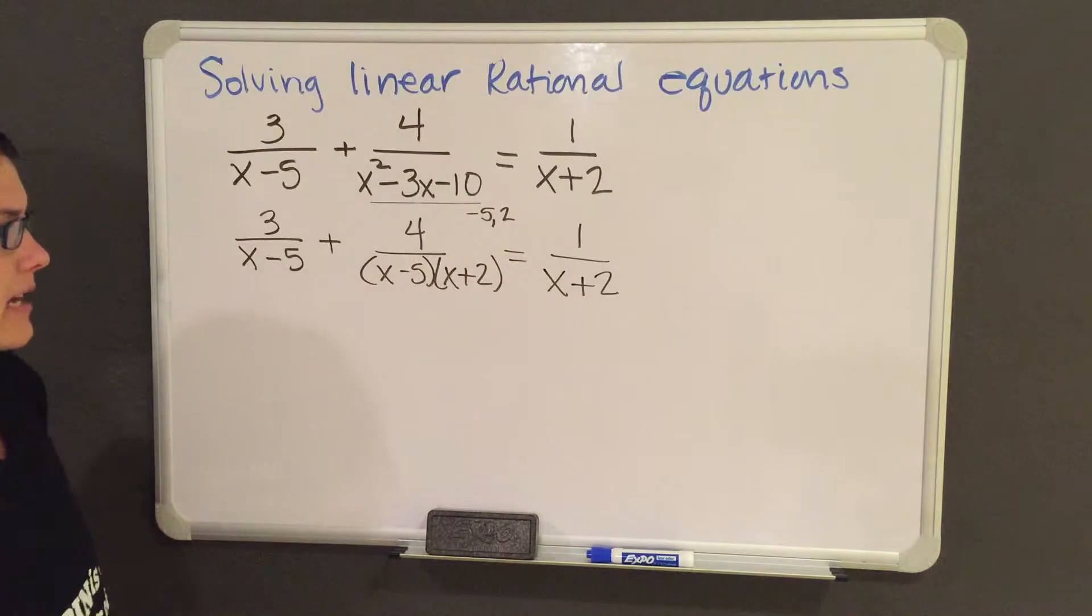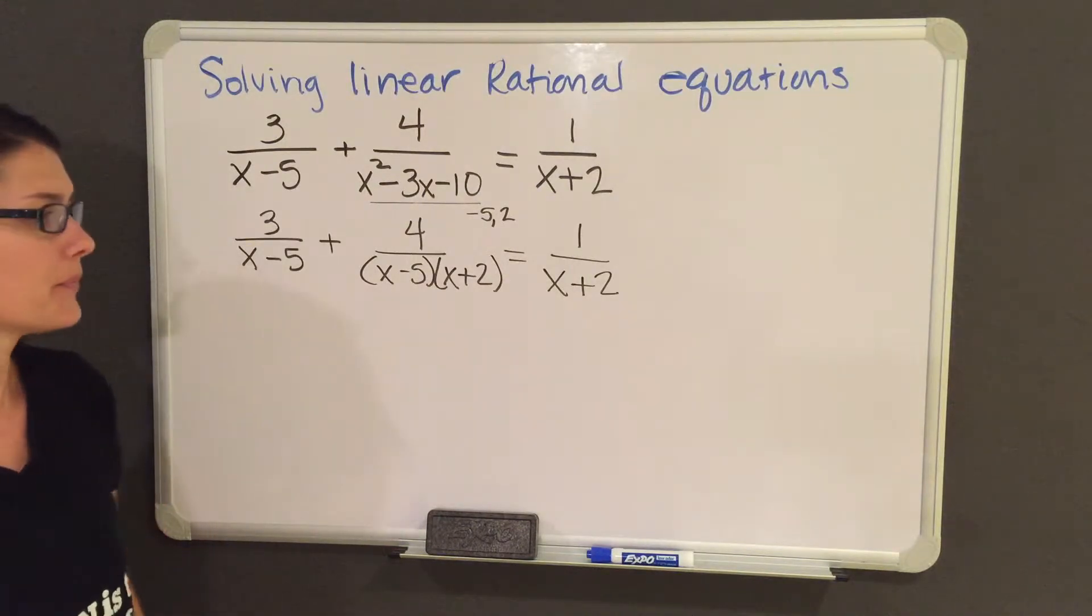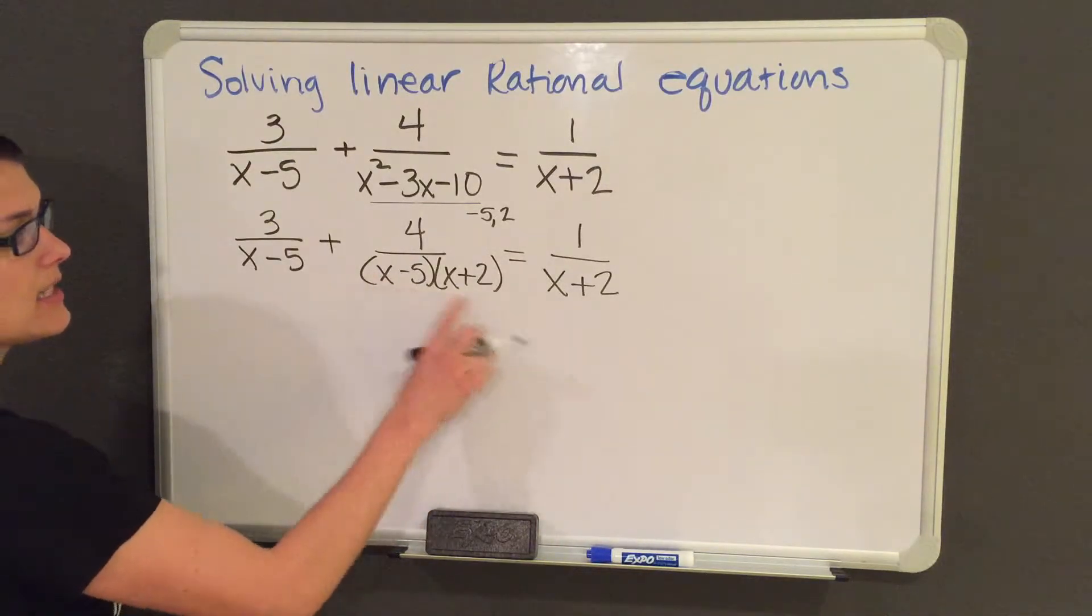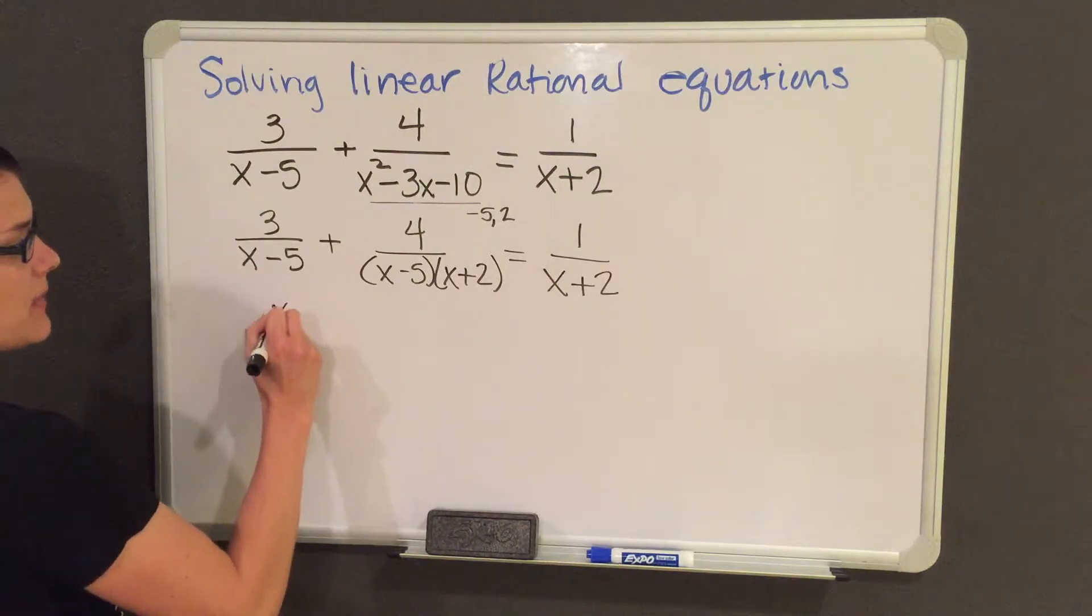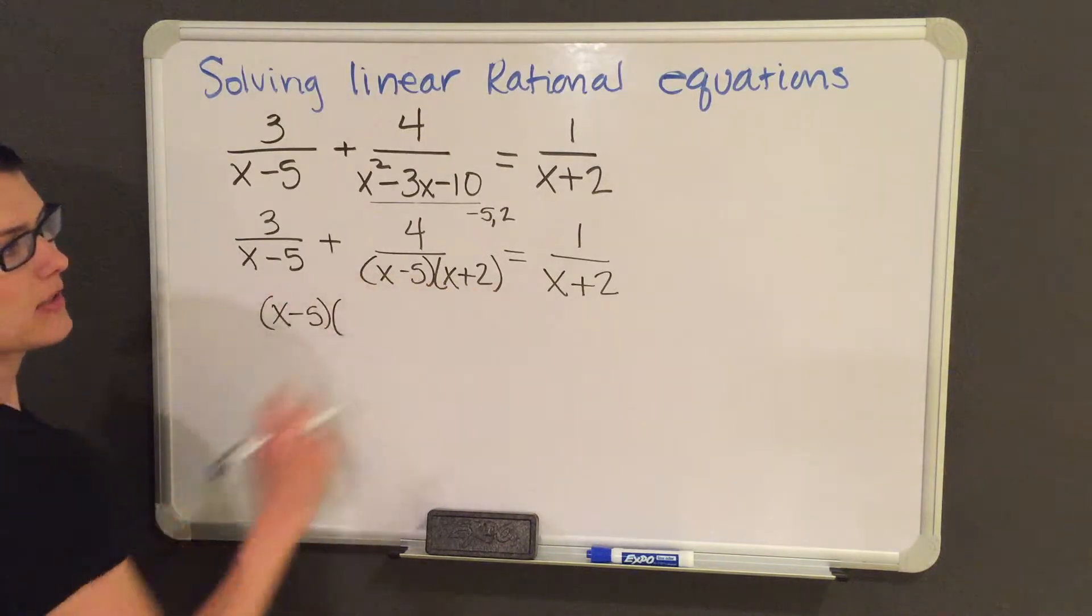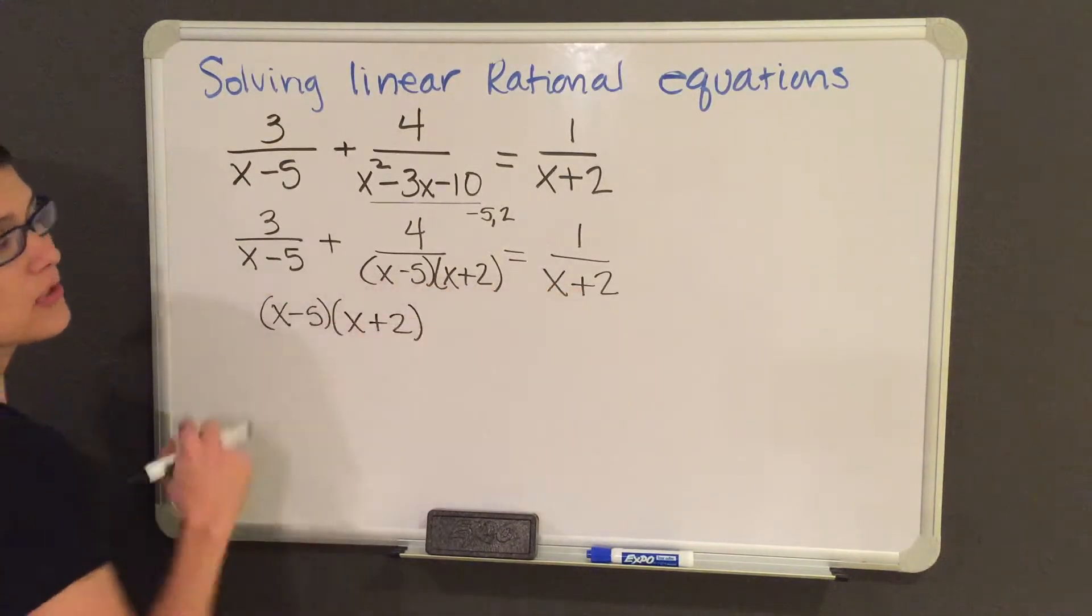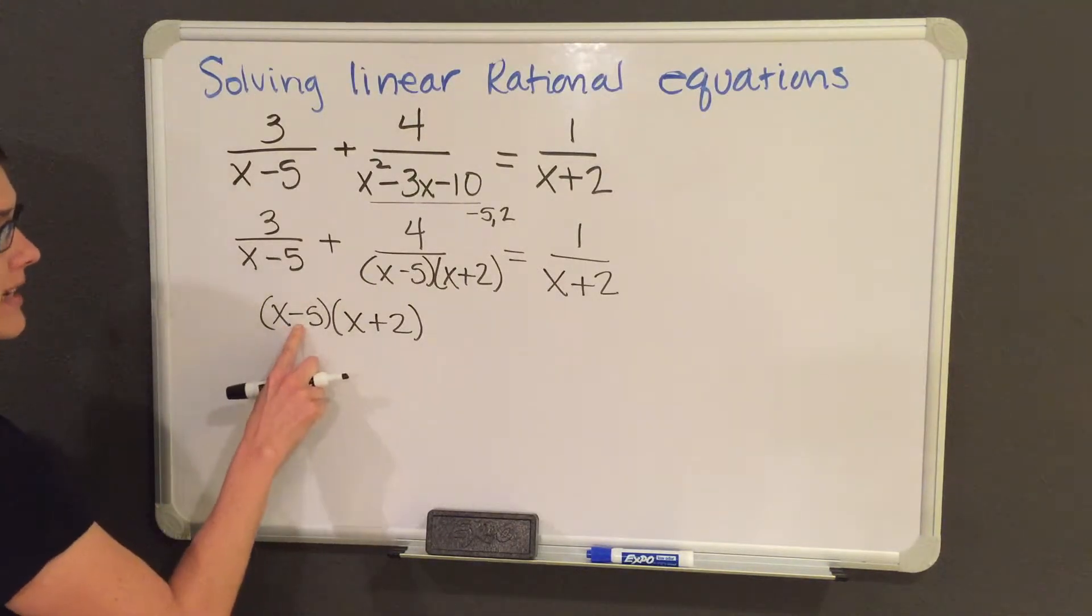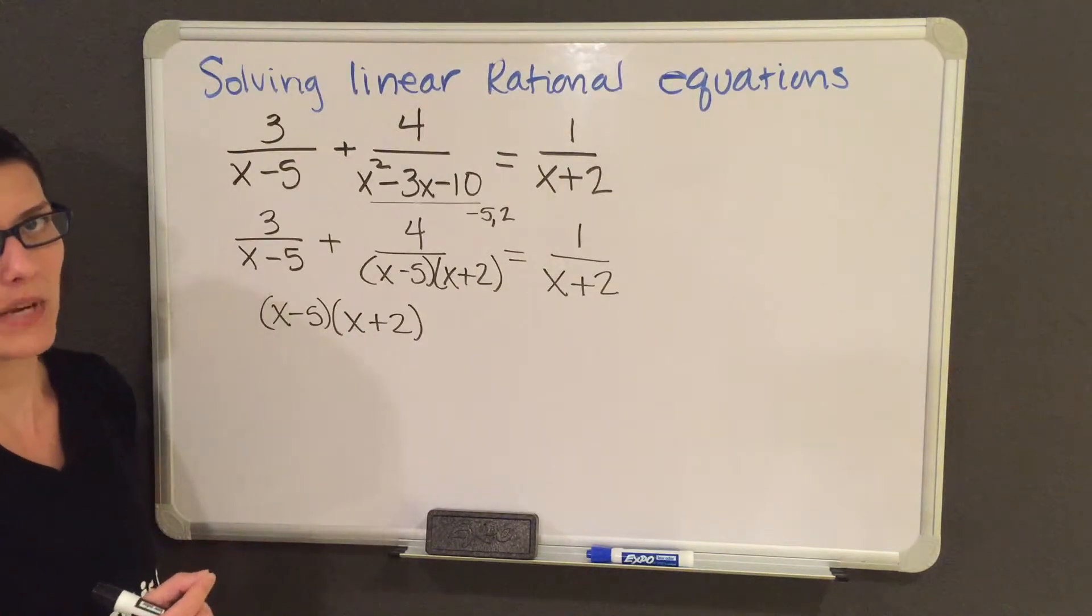After you factor all your denominators, the next thing you're going to do is get your greatest common denominator. My greatest common denominator in this case is any different factors that you have. So one of my factors is x minus 5. Another factor that I see is x plus 2, and those are the only two different factors that I see. So x minus 5 and x plus 2 is my greatest common denominator.